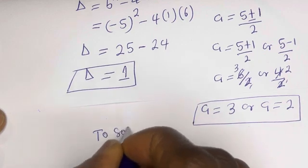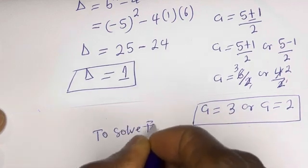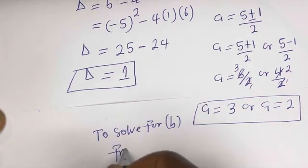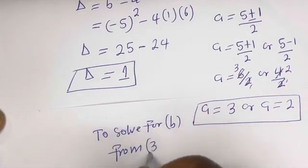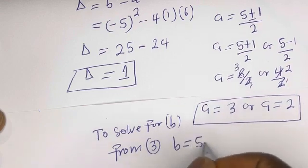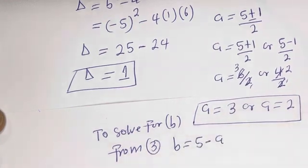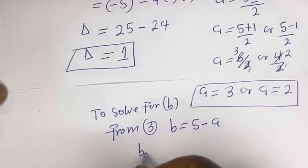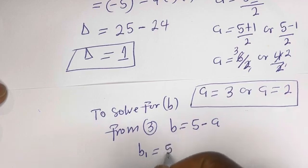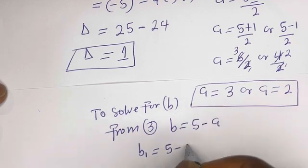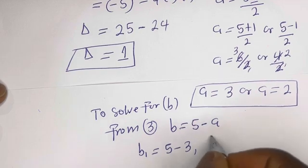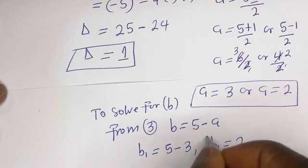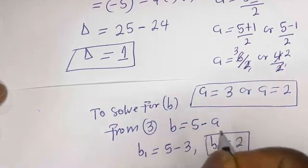To solve for b, from equation 3, b is equal to 5 minus a. So b1 is equal to 5 minus a1, where a1 is 3. Therefore b1 is equal to 5 minus 3, which is 2. This is the value of b1.